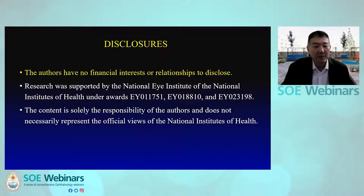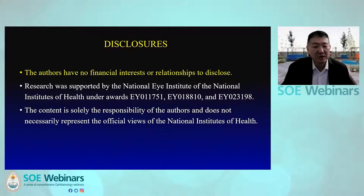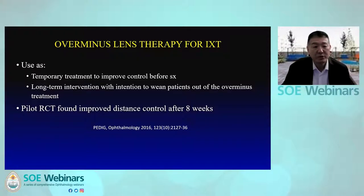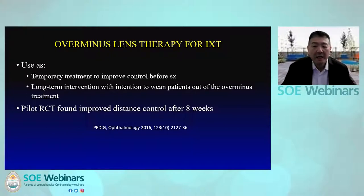Here is a list of writing committee members; we do not have any financial interests relevant to this course. The study was funded by the National Eye Institute. Over-minus lens therapy is a non-surgical treatment option for IXT, typically used as a temporary treatment to improve control before considering orthoptics or surgery. A pilot RCT by PEDIG found that over-minus lenses improved distance exotropia control after only eight weeks of treatment. The primary study objective was to assess the treatment effect of over-minus lenses on distance IXT control after 12 months of treatment.